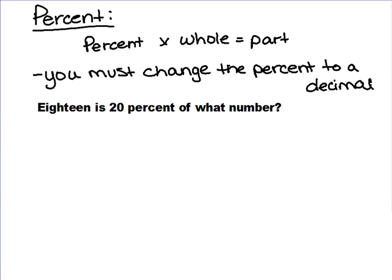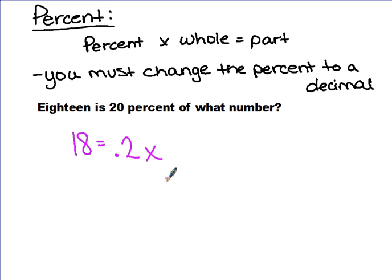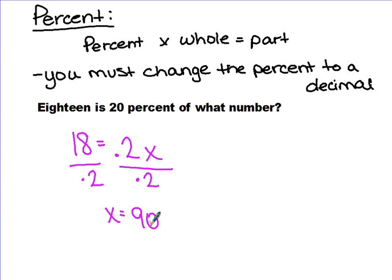We're going to take this one step at a time. '18 is' means equals. We have 20% — remember we must change the percent to a decimal, which makes it 0.2 or 0.20. And 'of what number' means times what number. So it's 18 equals 0.2x, and we're solving for x. We would divide both sides by 0.2, and 18 divided by 0.2 equals 90. So x equals 90.